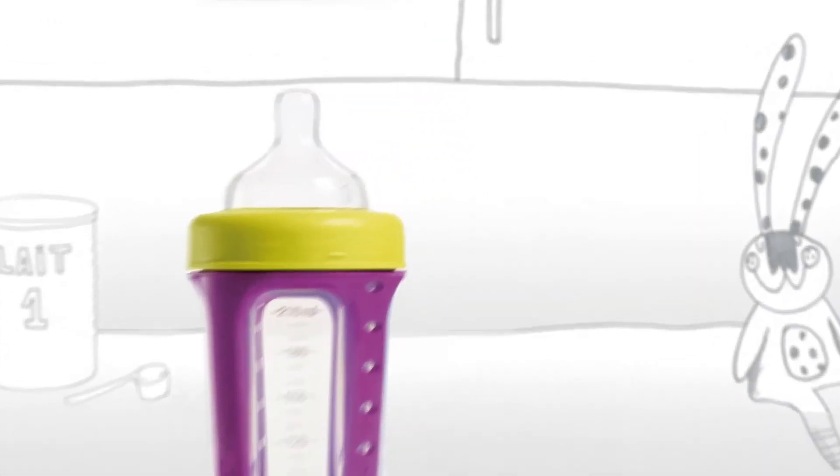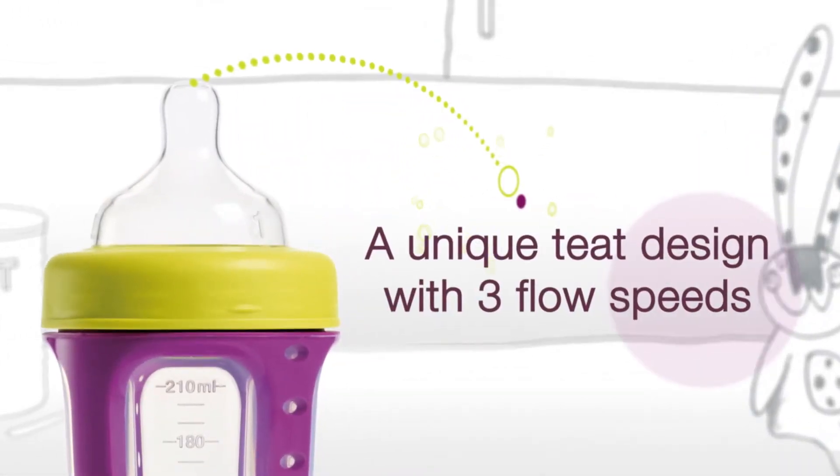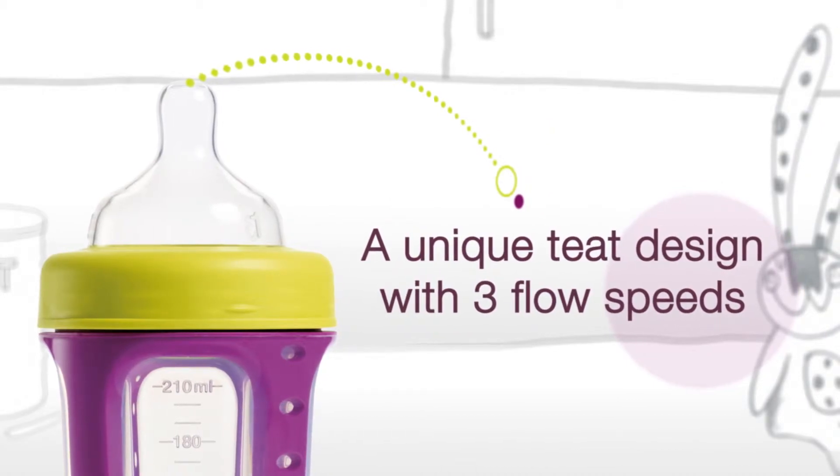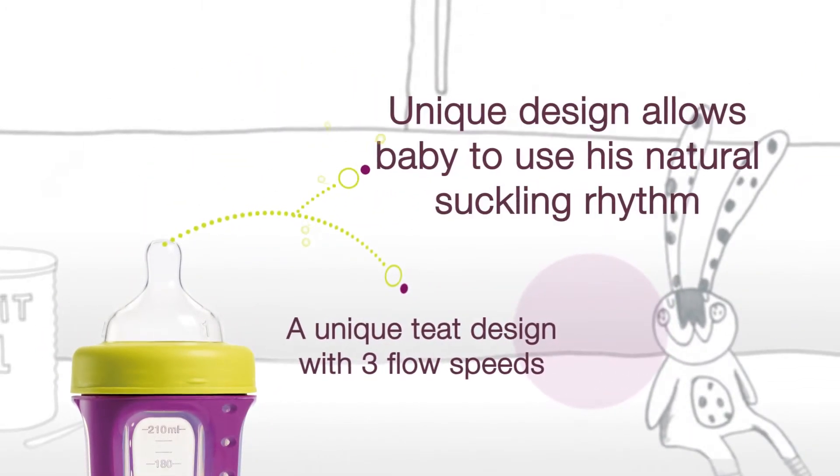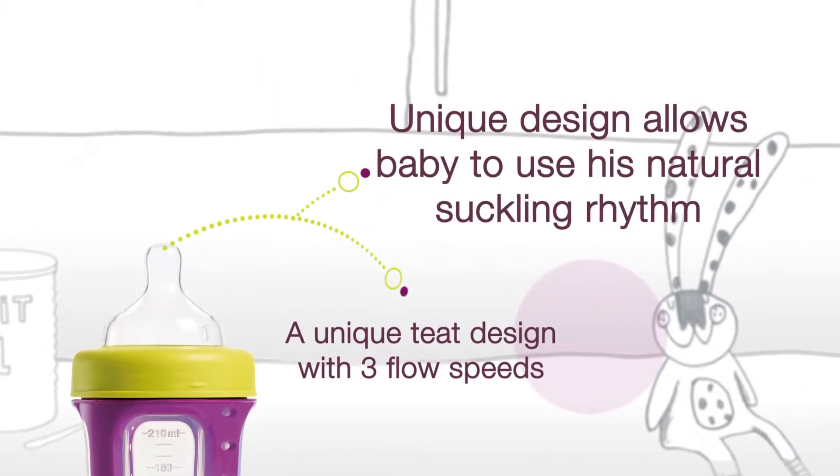A unique teat design with three flow speeds recreates the natural shape of the breast and has a variable flow dependent on its position. Baby controls the milk flow in the same way he would when breastfeeding.